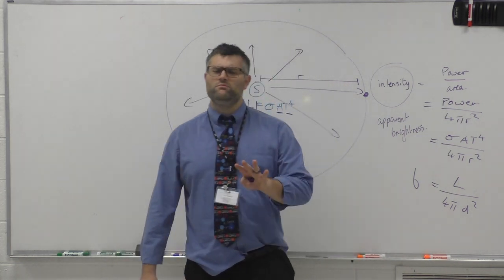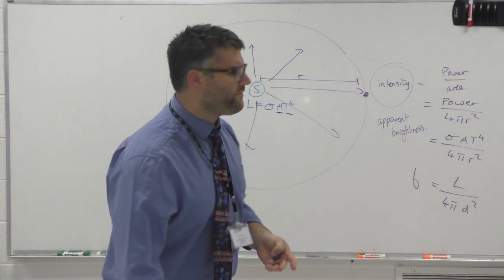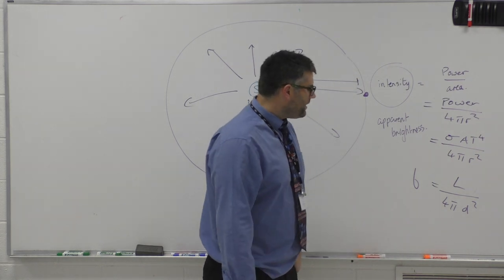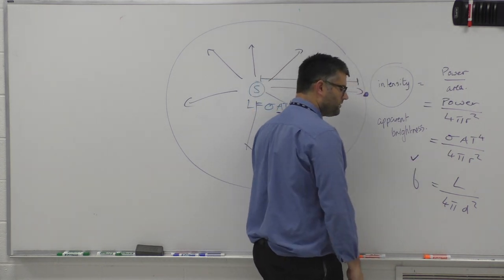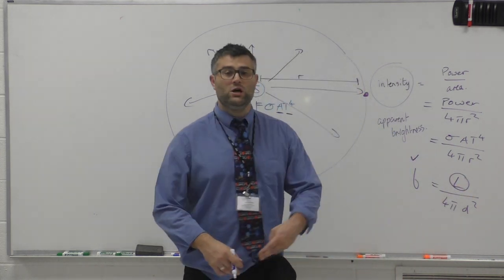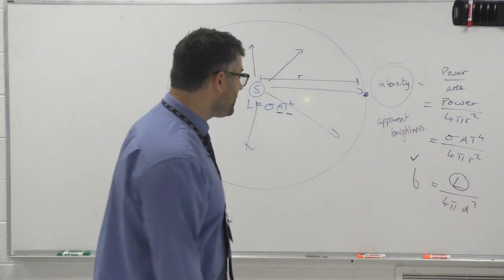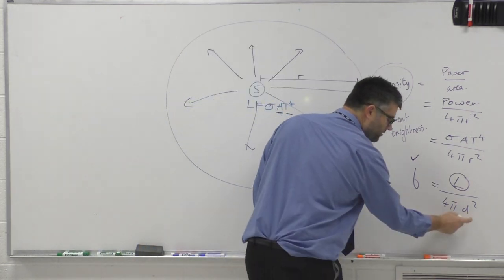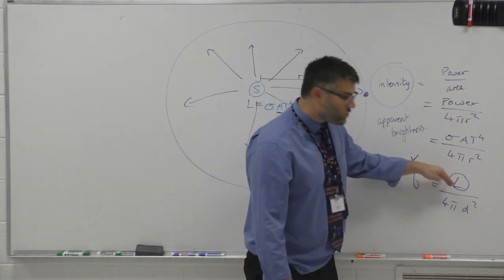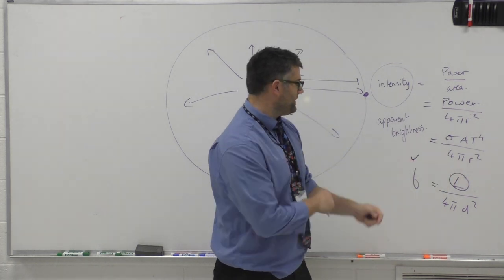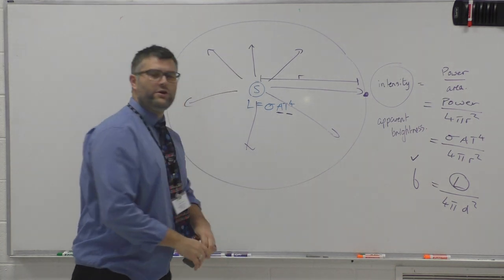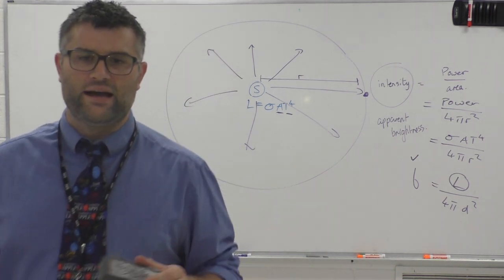So you might be thinking, well okay, I've seen this before in the previous video. But the point here is we can measure this apparent brightness, and if we happen to be able to find out the luminosity through some other means, then we can potentially find the distance. Because we know the apparent brightness we measure here on Earth, if we have some other way of measuring the luminosity, then we can find the distance to that star.